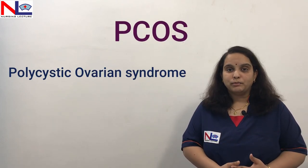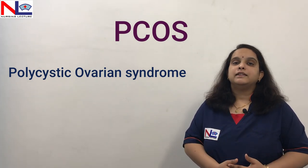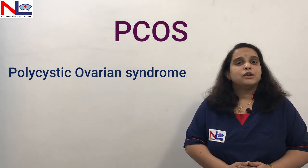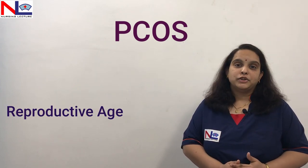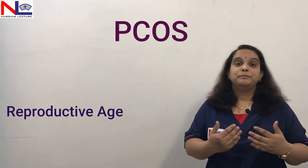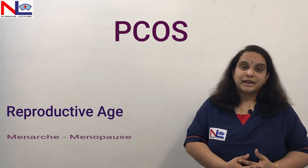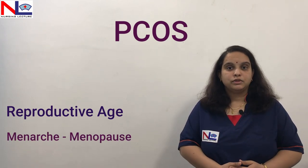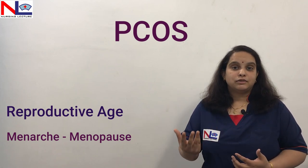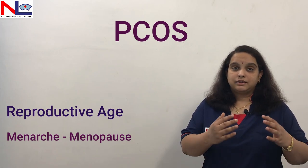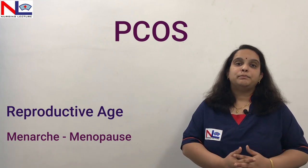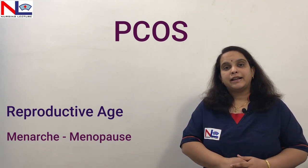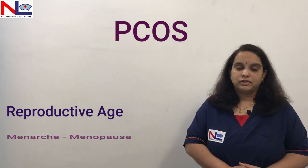But in case of PCOS, there are many other features which arise in a woman. This PCOS usually arises in the reproductive age of a woman — the period that starts with menarche and ends with menopause. So the problem arises somewhere in between the beginning and end of her menstrual cycle.